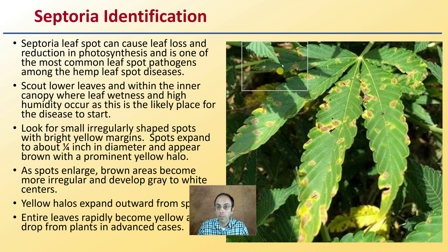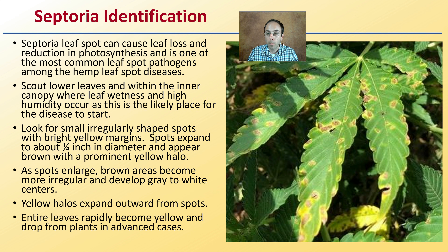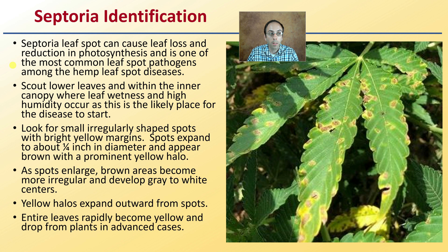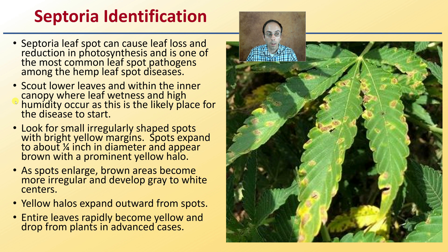Proper identification is important. Septoria leaf spot can cause leaf loss and reduction in photosynthesis and is one of the most common leaf spot pathogens among hemp leaf spot diseases. Scout lower leaves and within the inner canopy where leaf wetness and high humidity occur, as this is likely a place for the disease to start.